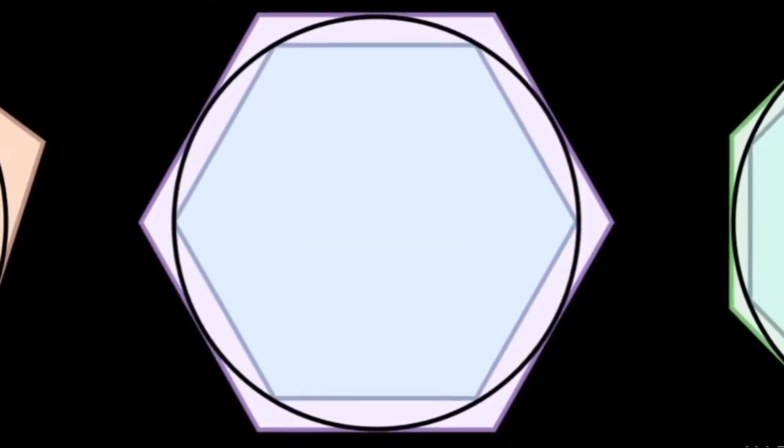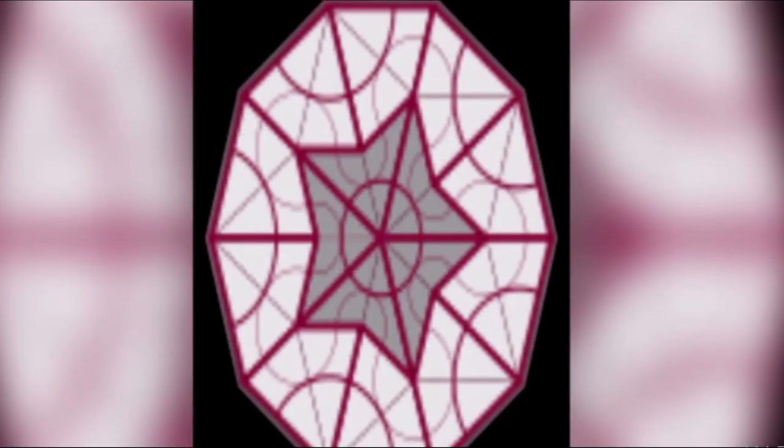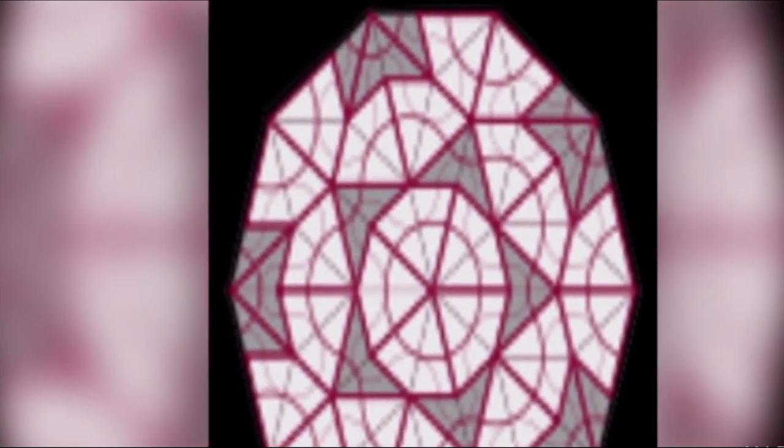In prophase 2, we see the disappearance of the nucleoli and nuclear envelope again, as well as the shortening and thickening of the chromatids; centrosomes move to the polar regions and arrange spindle fibers for the second meiotic division. In metaphase 2, the centromeres contain two kinetochores that attach to spindle fibers from the centrosomes at opposite poles; the new equatorial metaphase plate is rotated by 90 degrees compared to meiosis 1, perpendicular to the previous plate.